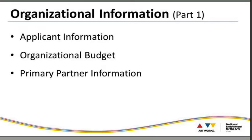Part one of the application is all about the organization — you'll include information about your organizational budget as well as your primary partner. As Jason stressed in the eligibility requirements for arts engagement, design, and cultural planning projects, make sure you have that eligible partnership in place and it's clearly articulated in this section. For example, if the local government is applying as the lead, make sure you have your nonprofit 501(c)(3) listed as your primary partner.